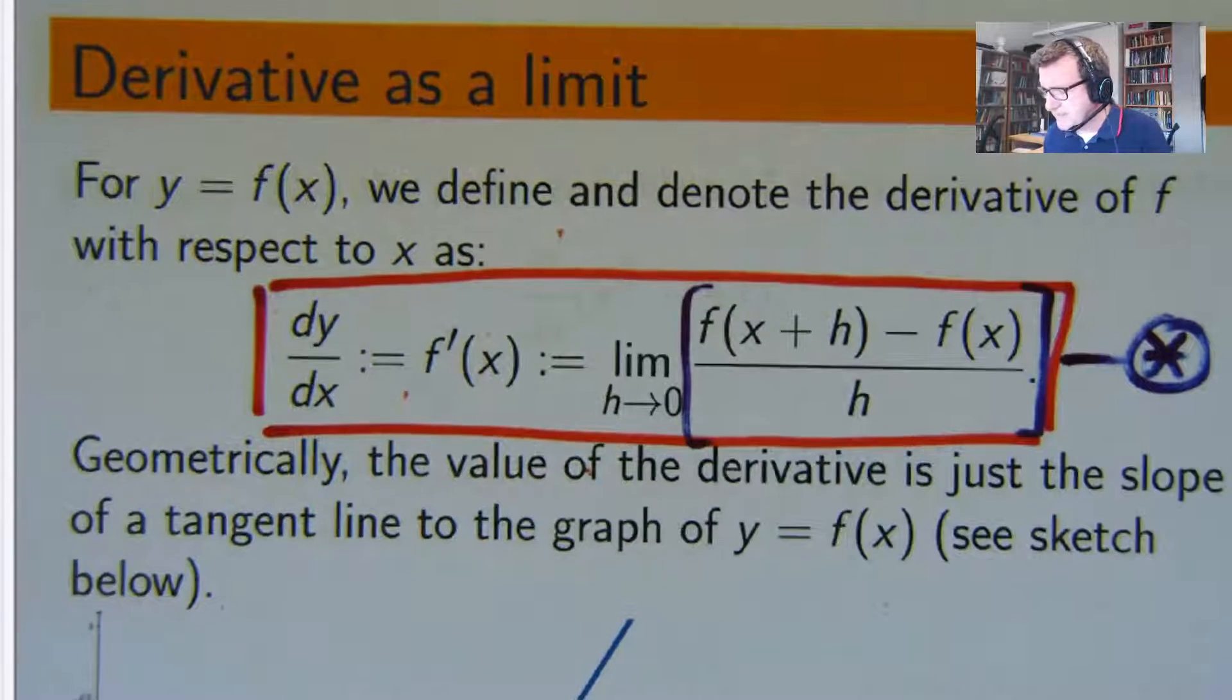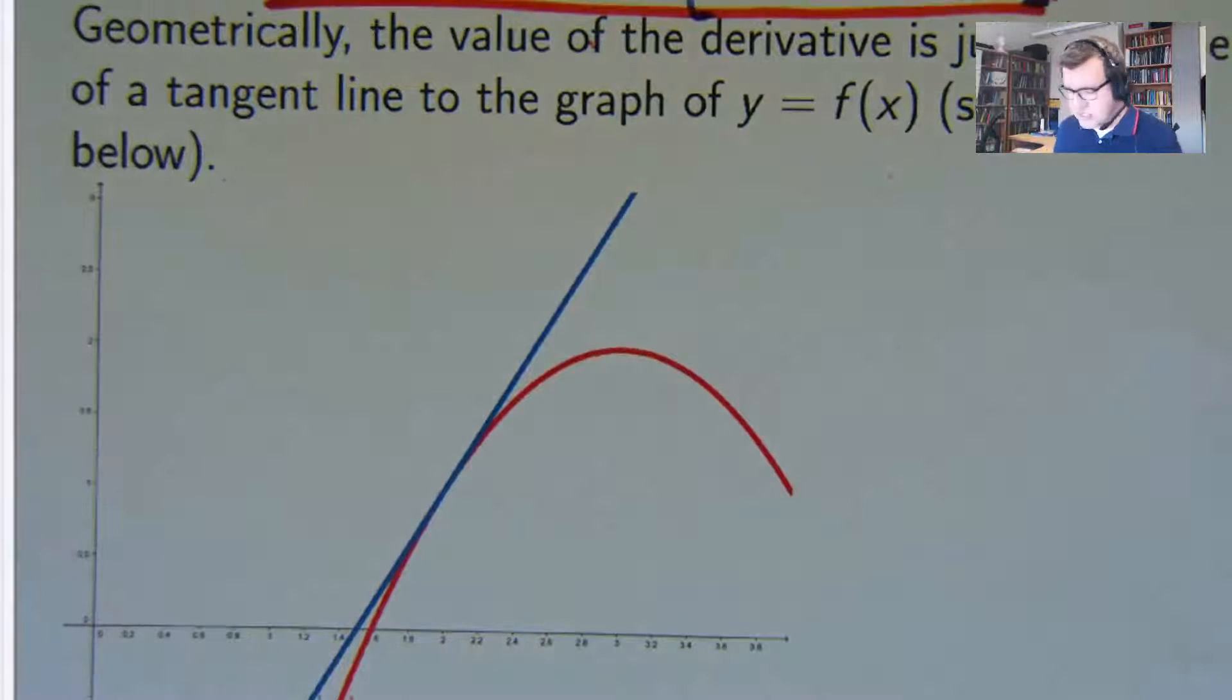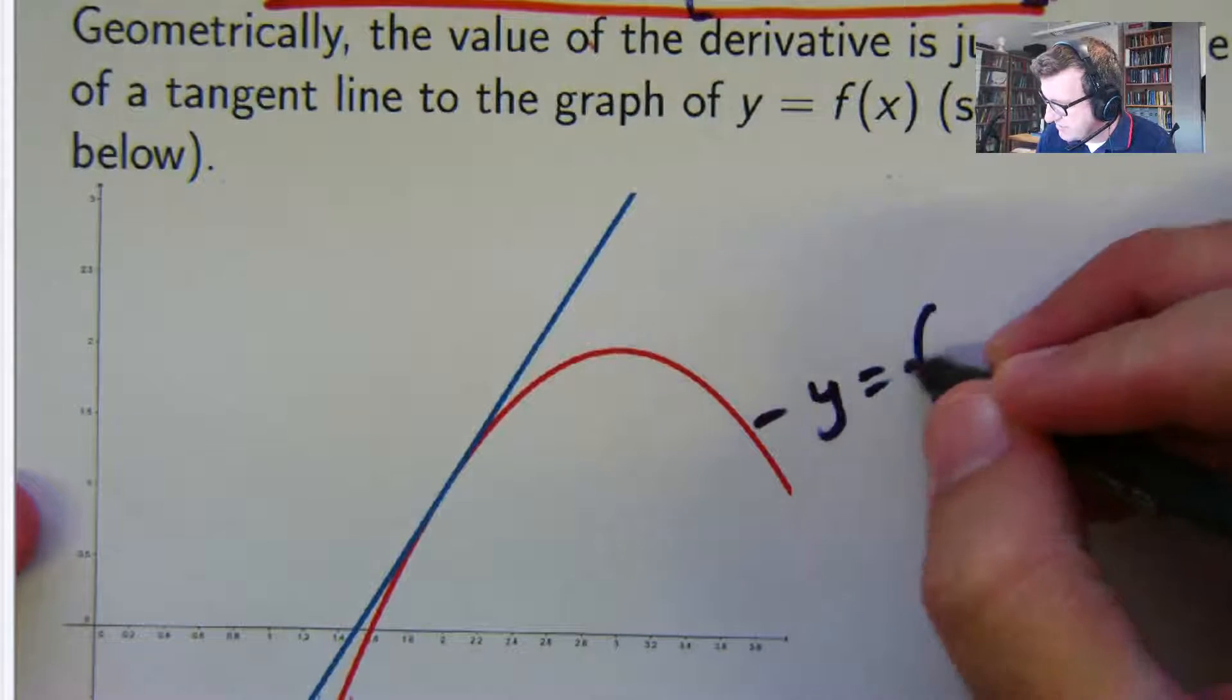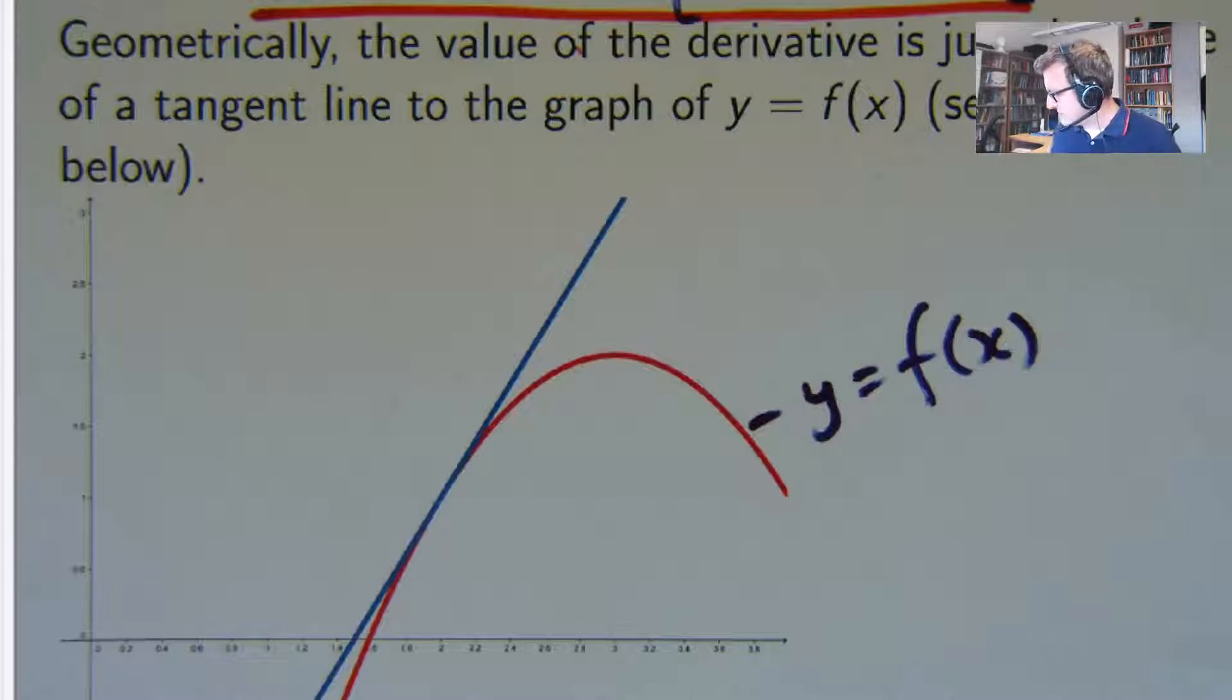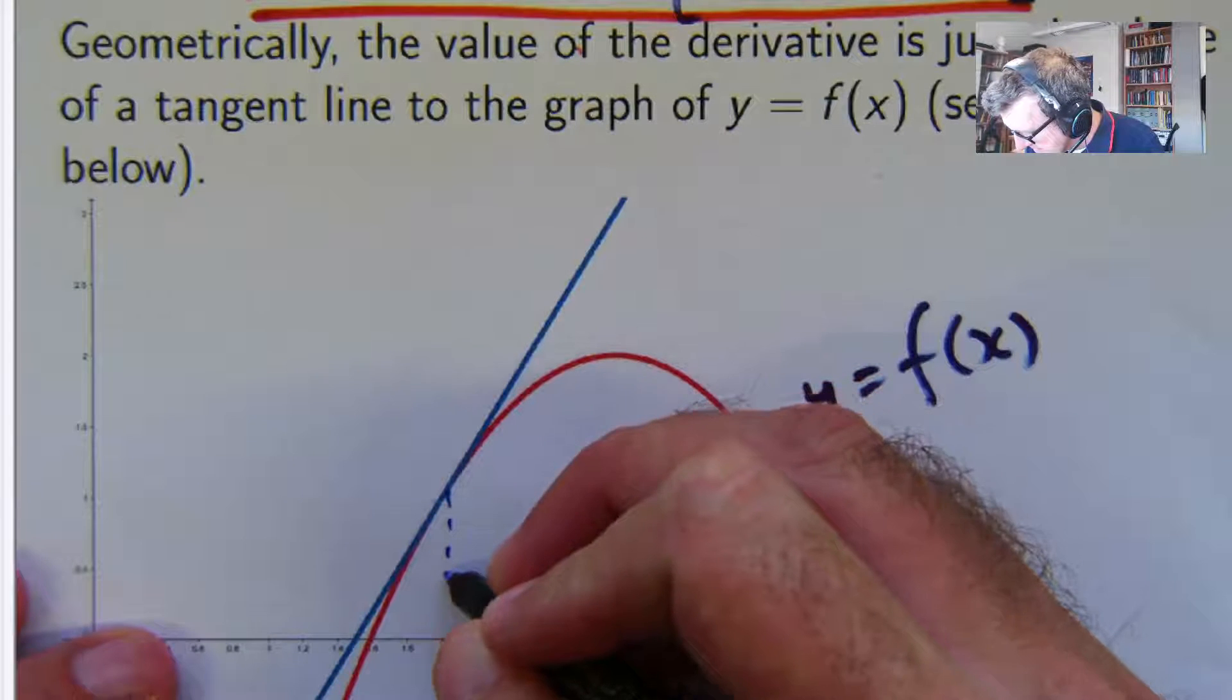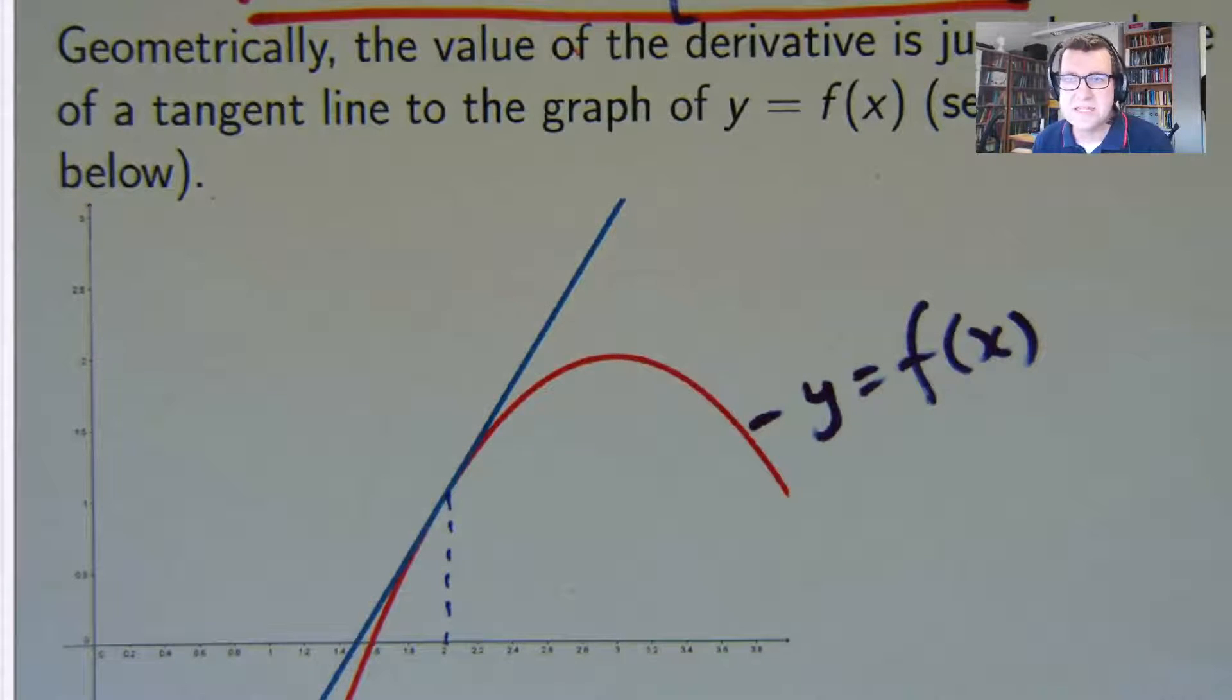But geometrically, what's going on here? Well, I'm glad you asked. So geometrically it's very easy to explain what's going on. So you can see in this picture there's a red curve. I'm going to call that my function. Who cares what it is? And you can see at the point, at least in this picture, x equals 2, we've drawn the blue tangent line to the curve.